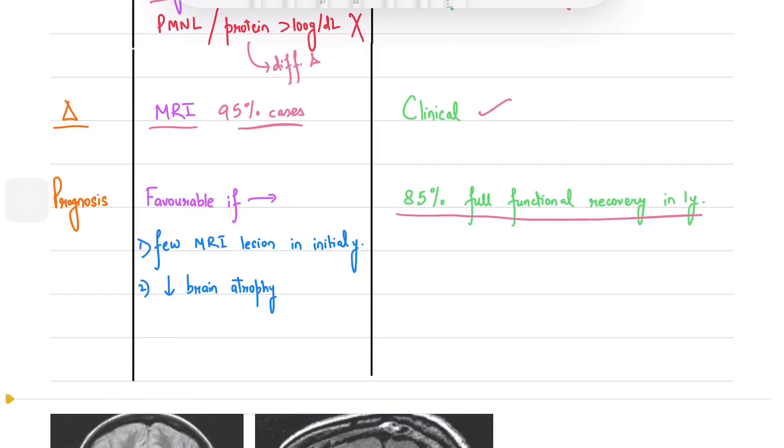85% of patients are fully functionally recovered from GBS in a year and the deaths are usually due to pulmonary complications. Patients with a favorable prognosis in MS develop few MRI lesions in the initial year and have less brain atrophy and vice versa.